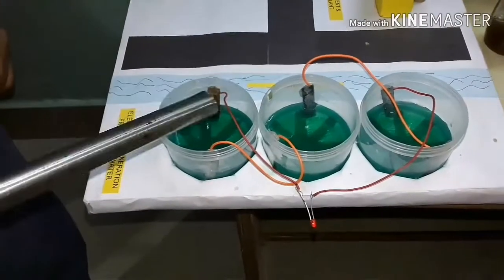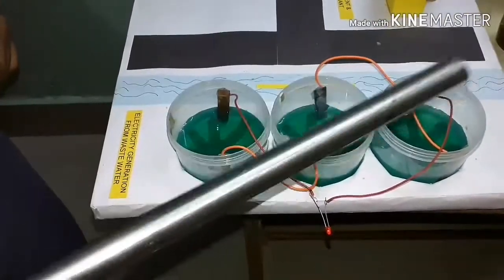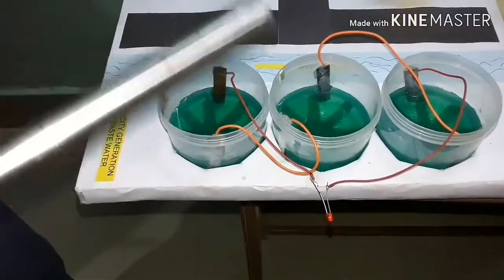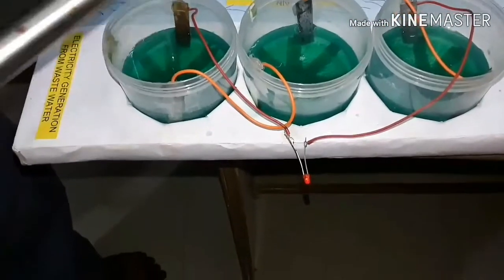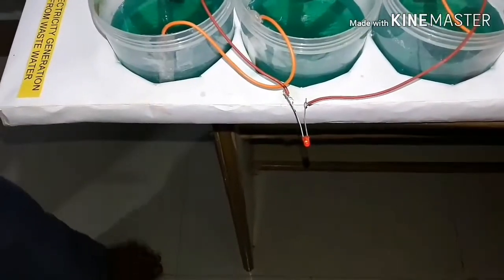Here you can see this green water is the example of drain water. It also contains bad materials which are available in the drain. And after the process, here we can see the LED bulb is glowing.